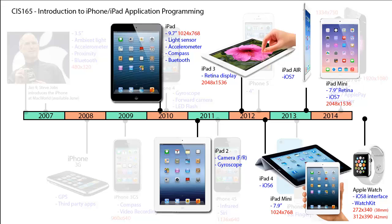The iPad 4 came out a little later, introducing iOS 6. Then the iPad mini, with a 7.9-inch screen compared to the iPad's 9.7 inches, came in at 1024 by 768 but later introduced a retina display. Along with the iPad Air, it introduced iOS 7, and the retina display for the iPad mini took it to 2048 by 1536, the same as the iPad 3. What's coming up? Apple has announced the Apple Watch, which will tie into an iPhone and provide another way of accessing apps.